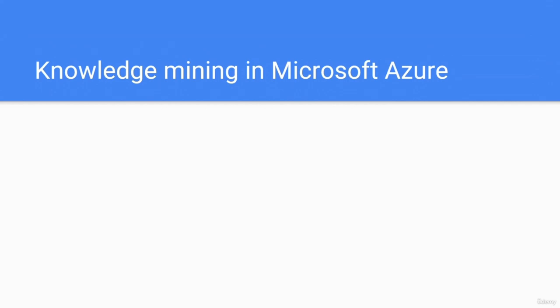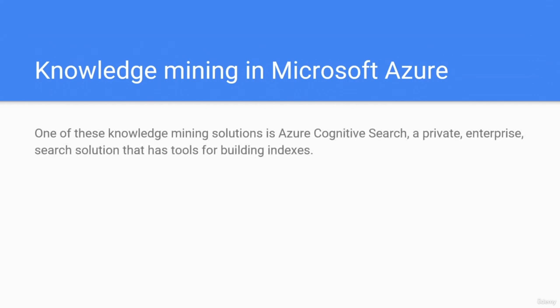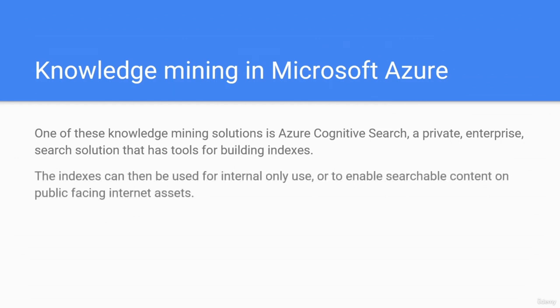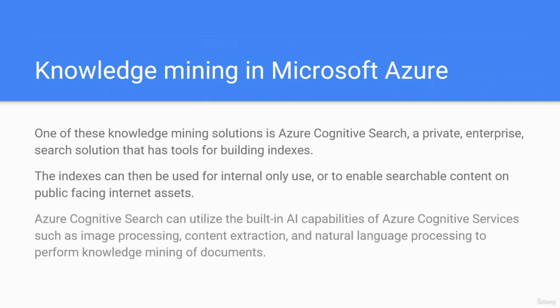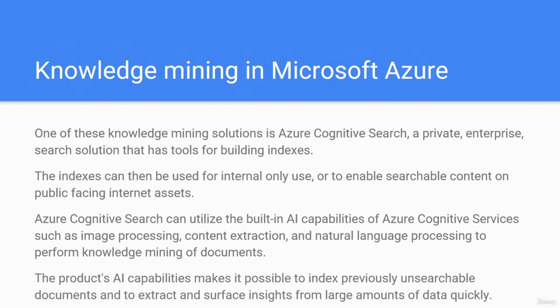Knowledge mining in Microsoft Azure. One of these knowledge mining solutions is Azure Cognitive Search — a private enterprise search solution that has tools for building indexes. The indexes can then be used for internal use or to enable searchable content on public-facing internet assets. Azure Cognitive Search can utilize the built-in AI capabilities of Azure Cognitive Services such as image processing, content extraction, and natural language processing to perform knowledge mining of documents, making it possible to index previously unsearchable documents and extract insights from large amounts of data quickly.